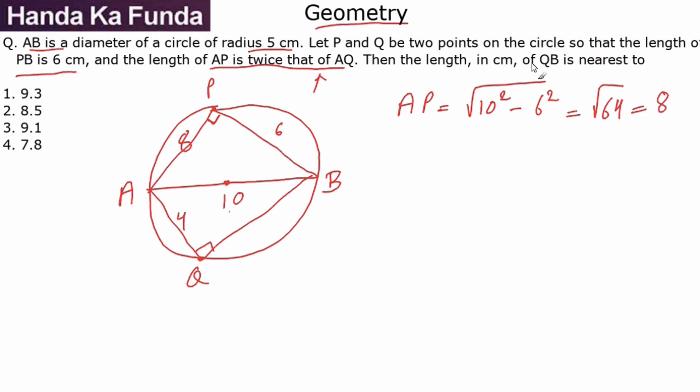And once I have this as 4, I am asked for the length of QB. So QB once again will be square root of hypotenuse square minus side square, that is 100 minus 16 or root of 84. Root of 84 will be 9 point something because root 81 is 9, this would be a little more than 9.